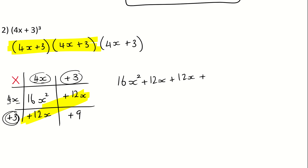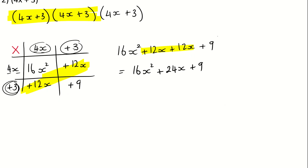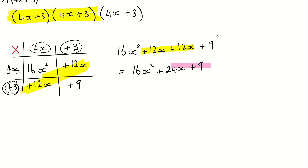16x squared plus 12x plus 12x — and 3 times 3 is just 9, no x's. These are like terms, so 12 add 12 is 24. So I've got 16x squared plus 24x plus 9. And this now has to be multiplied by the last bracket, and for that I need an extra table.